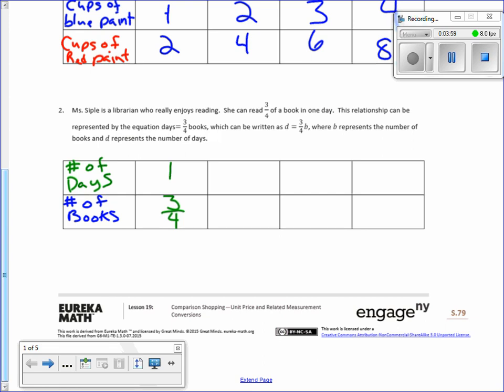In two days she can read three quarters times two, which is six quarters, which is one and a half. So in two days she can read a book and a half. In three days, it's going to be three quarters times three, which is nine quarters, which is four goes into nine two with a remainder of one. So in three days she's reading two and a quarter books. And then finally, day four, three quarters times four cancels, and you get three. So in four days she can read three books. She's not reading a whole book in a day, so it's got to be less than the number of days.